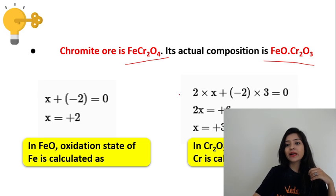What will we do individually? We will remove FeO and Cr2O3. We will remove iron and chromium separately. When we remove FeO, in FeO, the oxidation state of oxygen is minus 2.